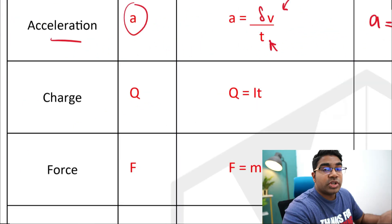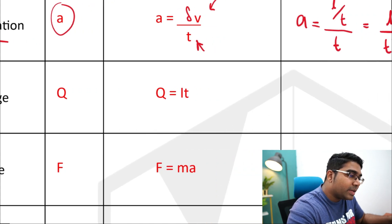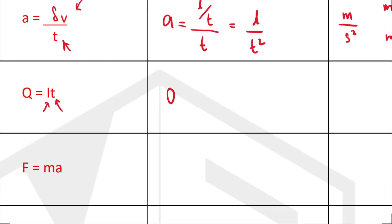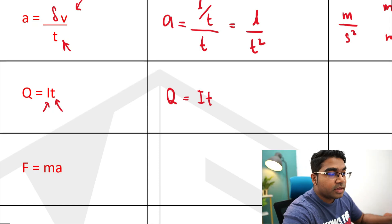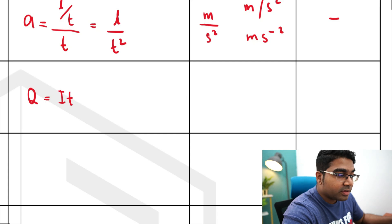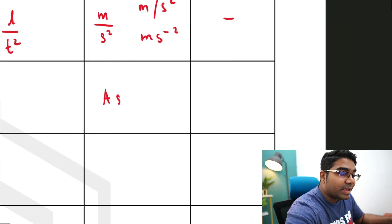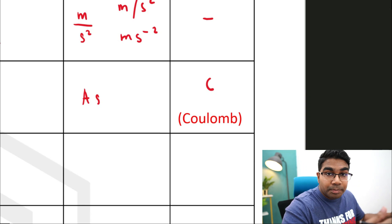For charge, the formula is Q = I × t. Both I (current) and t (time) are already base quantities, so the formula in base quantities remains I × T. The SI base units are therefore ampere seconds (A·s). There is a special SI unit for charge, which is the coulomb, written as capital C.